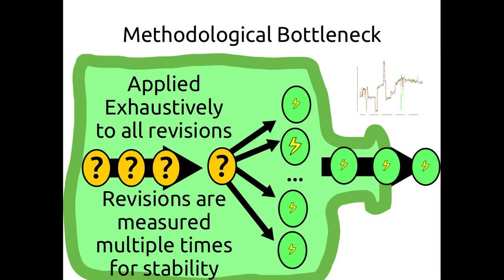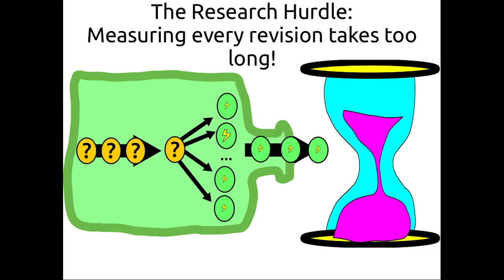Unfortunately, the Green Mining methodology has a methodological bottleneck: it is applied exhaustively to all revisions. We measured all the revisions we could, and to get those measurements we had to measure them multiple times for stability. This takes a long time. If we measured each revision ten times and had a hundred revisions, that's a thousand measurements — a lot of work if each takes about one to ten minutes.